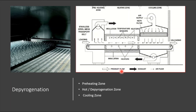The depyrogenation tunnel is categorized into three zones: the pre-heating zone, which receives the vials and begins drying them at around 110°C; the heating or depyrogenation zone, where maximum temperature is achieved — above 250°C and up to around 350°C — qualified based on temperature and time to achieve adequate depyrogenation; and finally the cooling chamber, where containers are cooled before moving toward the filling machine.